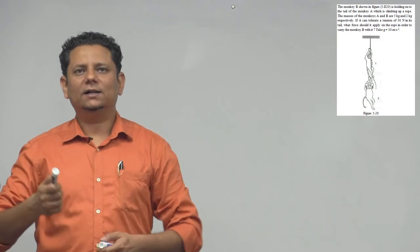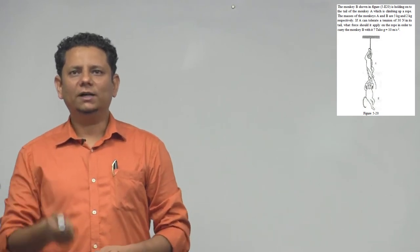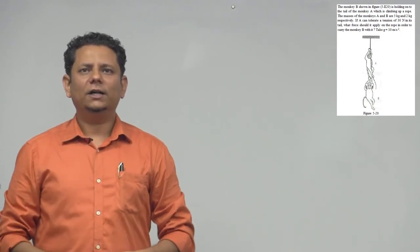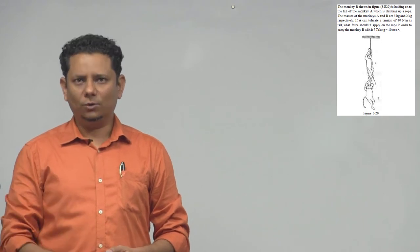Next question, again monkeys wala sawaal hai, Varma ji ko monkeys baat pasand hai, it looks like. Question says, the monkey B as shown in the figure is holding on to the tail of monkey A which is climbing up a rope.